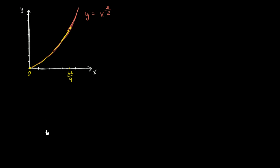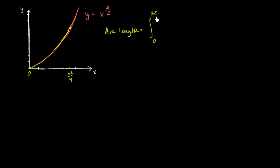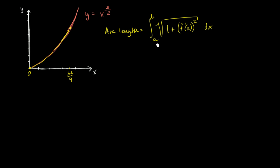I encourage you to pause the video and try this out on your own. So let's just apply the arc length formula that we got a conceptual proof for in the previous video. We know that the arc length is going to be equal to the definite integral from zero to 32 over nine of the square root of one plus f prime of x squared, dx.